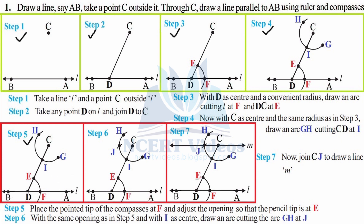Step six: with the same opening, pick up your compasses and place the needle on point I. Mark with the pencil to cut arc HG at point J. Step seven: pick up your ruler and draw a line through J and point C, naming it line m. This is a straight line.